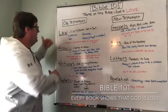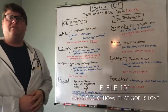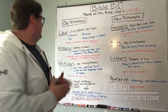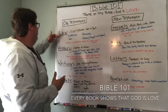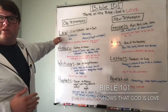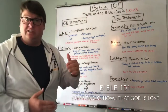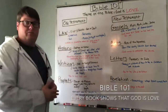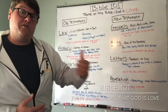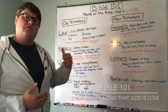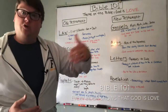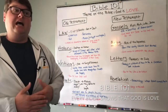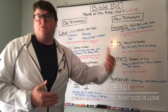The Old Testament is split into four different categories. You have the Law, which is the first five books — Genesis through Deuteronomy. You have the History books, Joshua through Esther. You have the Writings, Job through Song of Solomon. And then you have the Prophets, Isaiah through Malachi.